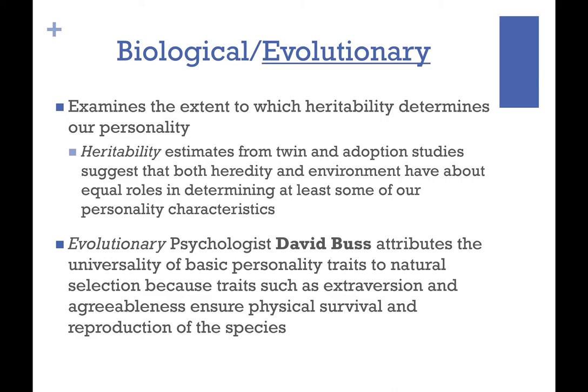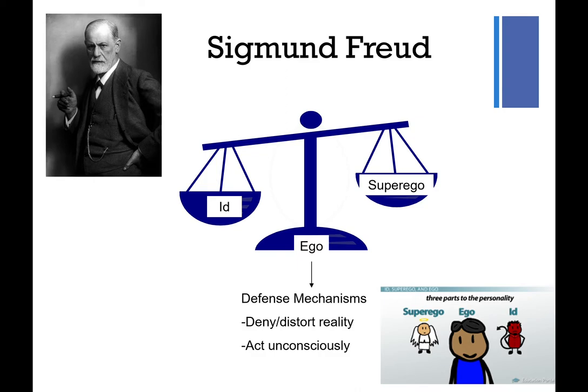Evolutionary psychologist David Buss attributes the universality of basic personality traits to natural selection, because traits such as extroversion and agreeableness ensure physical survival and the reproduction of our species. Those are the key buzzwords for evolutionary psychology.